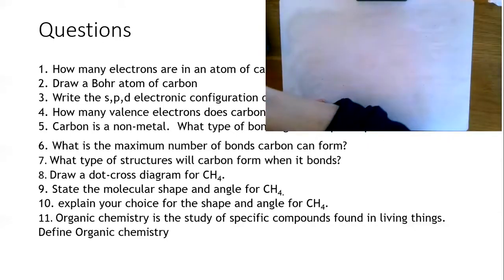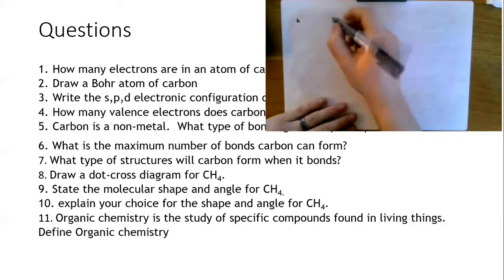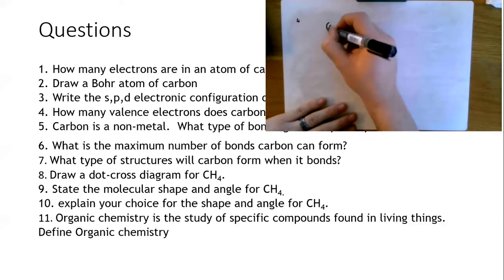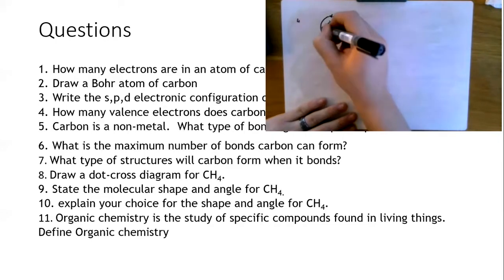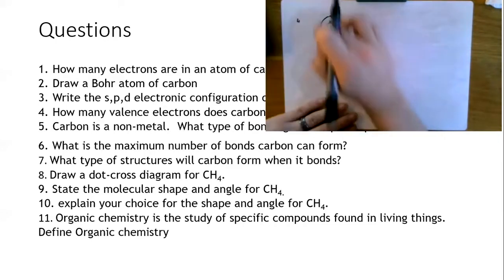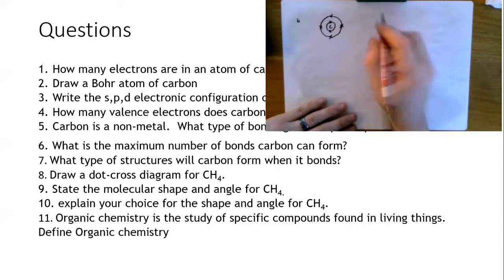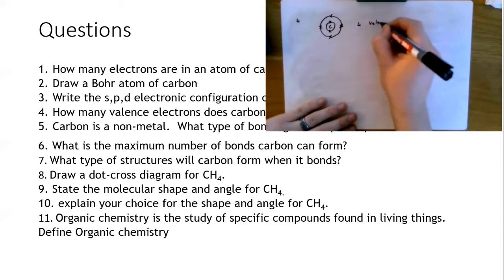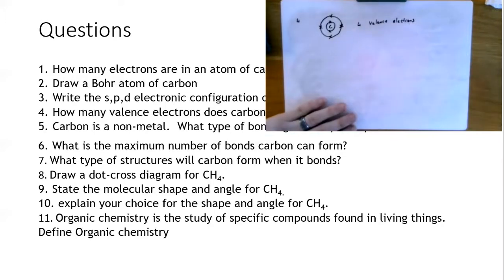How many valence electrons does carbon have? Valence electrons are the ones in the outer energy level. From our drawing of the carbon atom, we had two in the first shell and four in the second shell. The valence shell is the outer shell — the electrons involved in bonding. There are four electrons in the valence shell, so four valence electrons.